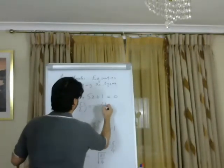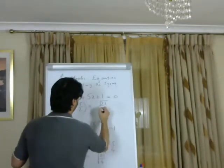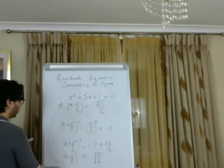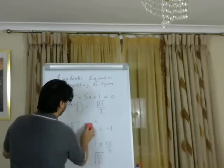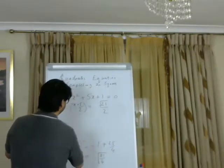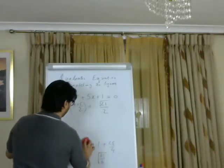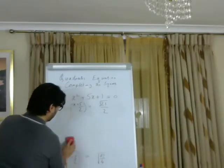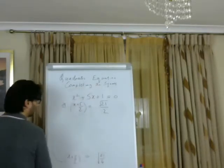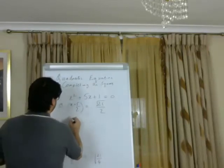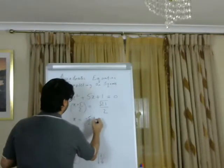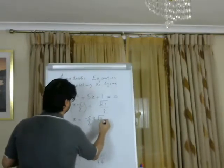We put a square root here. Since 3 times 7 is 21, and we put 2 in the denominator. So x equals minus 5 over 2 plus or minus root 21 over 2.